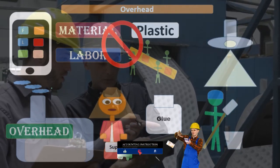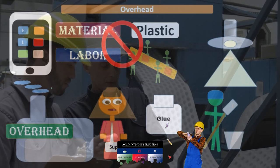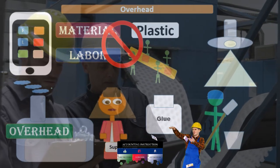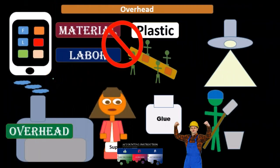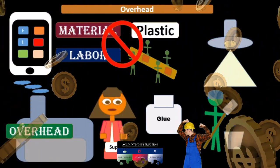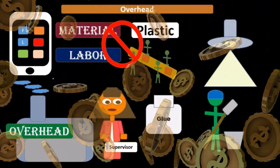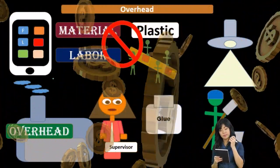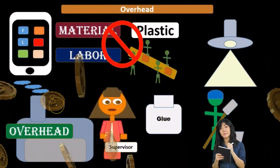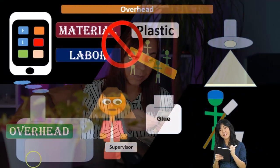Anything like utilities, rent, depreciation on the factory, or depreciation on equipment — those are all things we want to include in the inventory. We want to divide them out to particular inventory units, jobs, or processes, and therefore we put them into overhead first and then apply them out using some type of estimate.